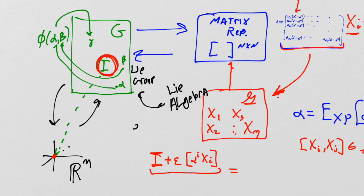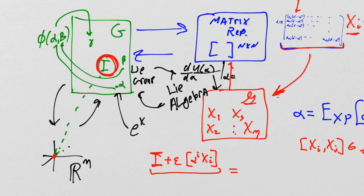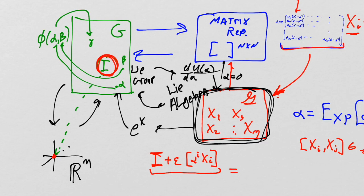In our next lecture we'll go through this summary again. We now know the relationship between the Lie group and Lie algebra: any element of the Lie algebra raised to some power is an element of the Lie group, and any element of the Lie group whose derivative is taken with respect to a parameter (at all parameters set to zero) is an element of the Lie algebra. Then we'll discuss the structure constants of the Lie algebra and work through many examples, following Gilmore.